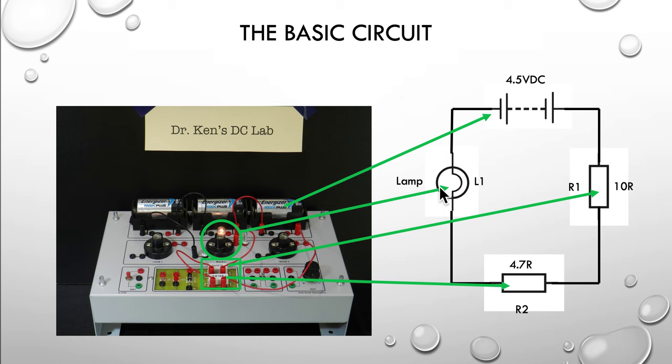You can see them a bit more clearly there: my battery across the back, then my light, the lamp, and then the two resistors are down here on the front of the little training aid.